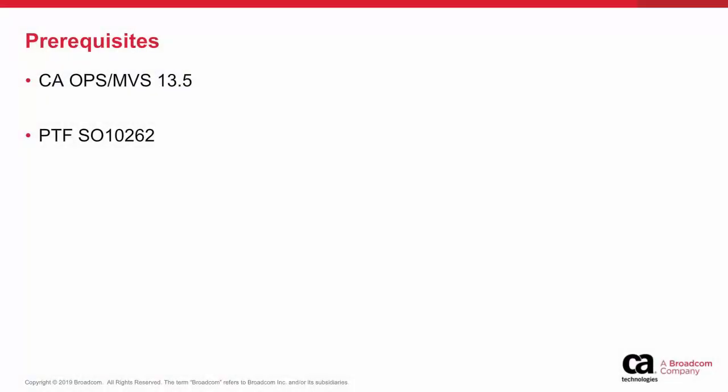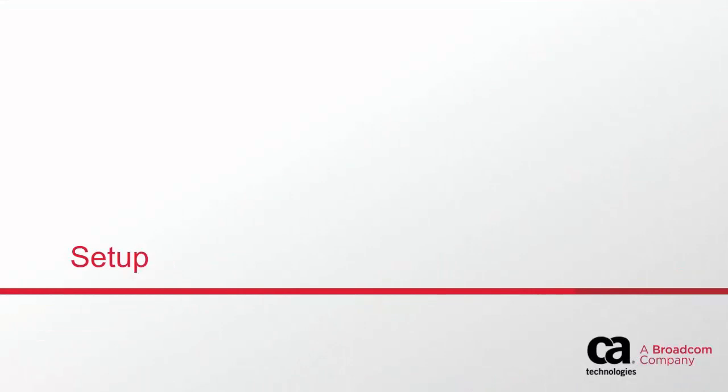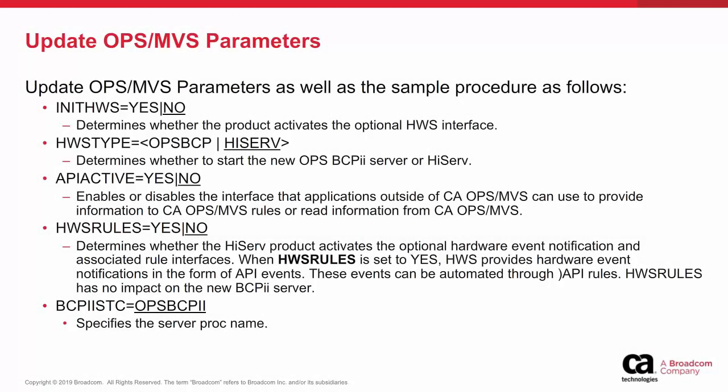Prerequisites are Ops MVS 13.5 and PTF SO10262. To set up the server, some Ops MVS parameters will need to be updated and the sample procedure distributed with Ops MVS may need customization. The following Ops MVS parameters must be set to implement the Ops MVS BCPII Server.